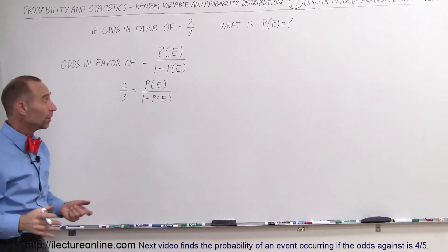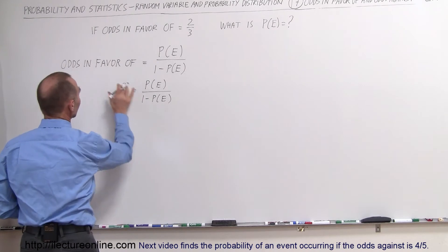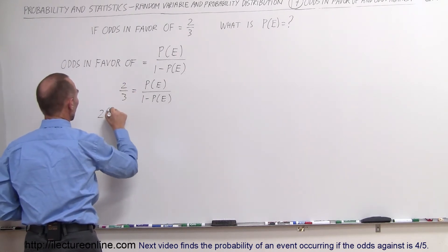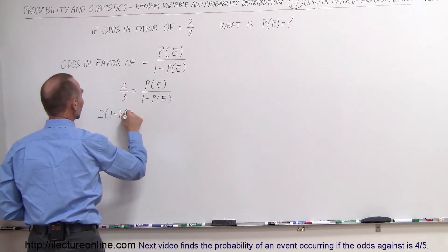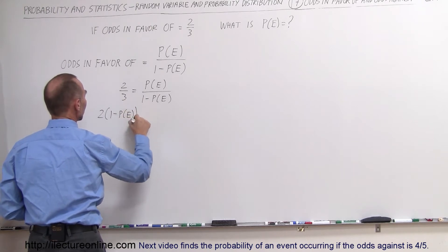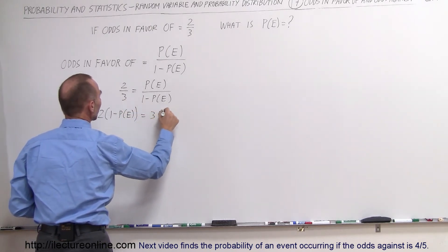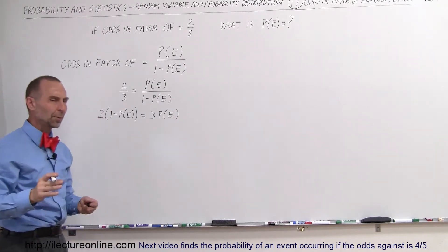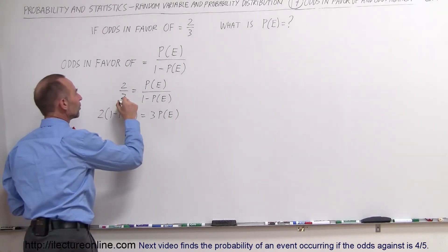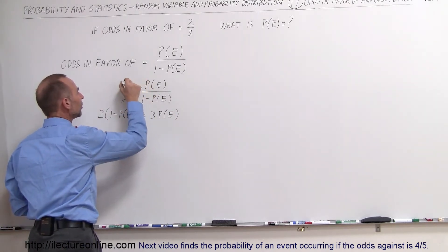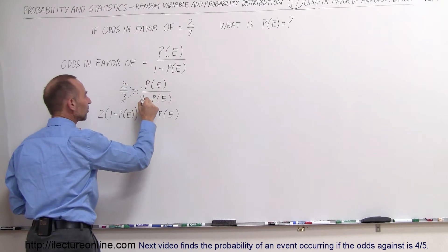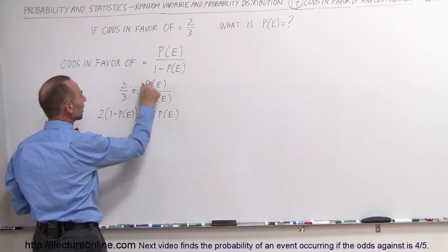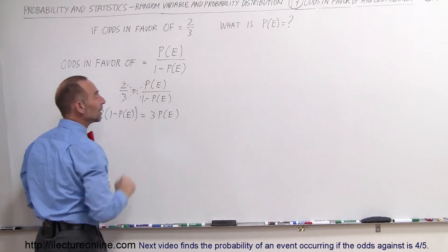Now we cross multiply — we multiply across the diagonal — so we have two times (one minus the probability of the event occurring) is equal to three times the probability of the event occurring. When you have two fractions equal to each other, you can multiply the two times this and the three times that and set them equal.